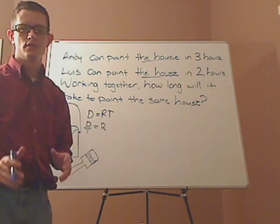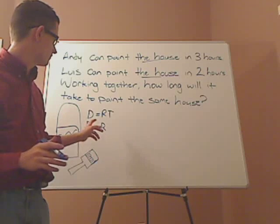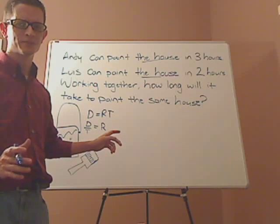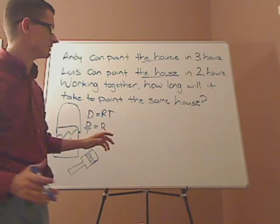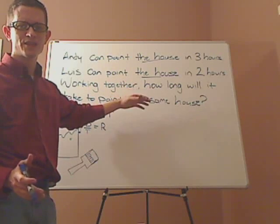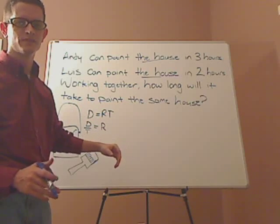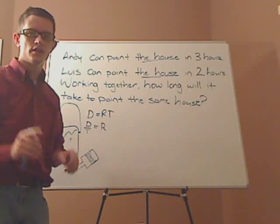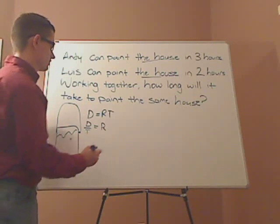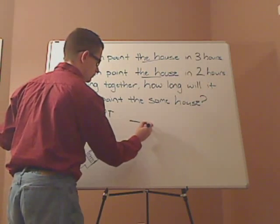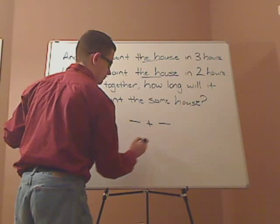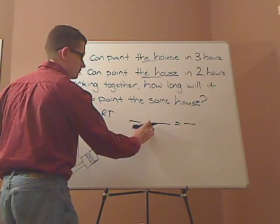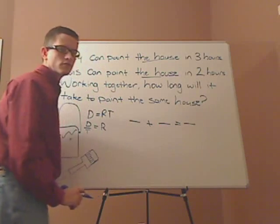You can make the distance whatever you want in relation to the problem. Obviously you don't want to make it like a different house or a mansion or something, but your distance is one house. And so, what you want to do is you want to take the rates and have them add up and equal the total rates.